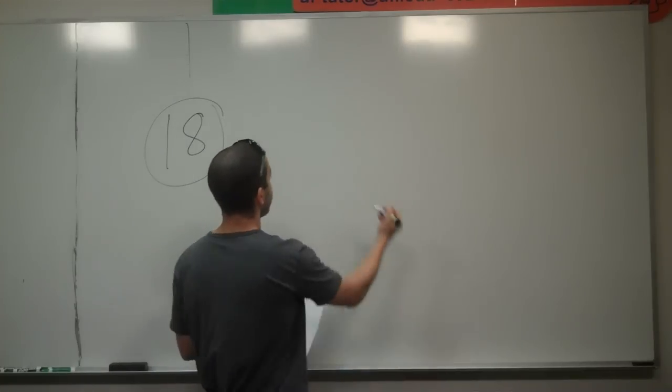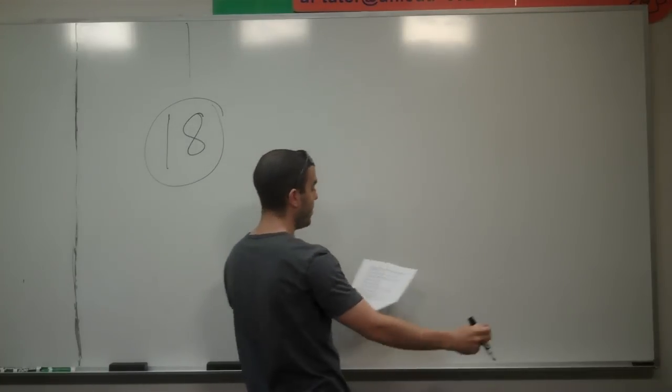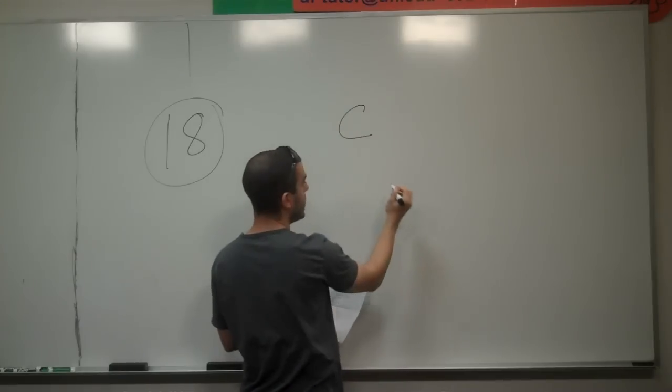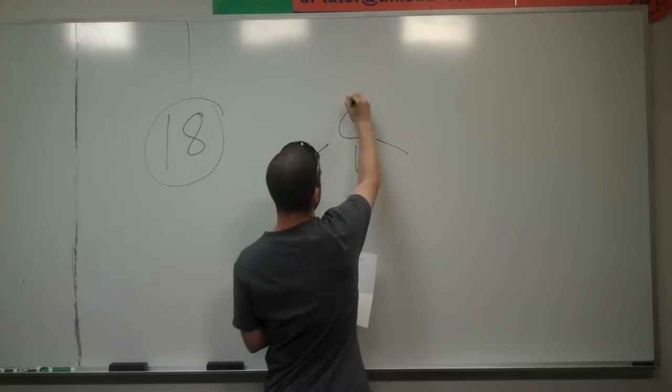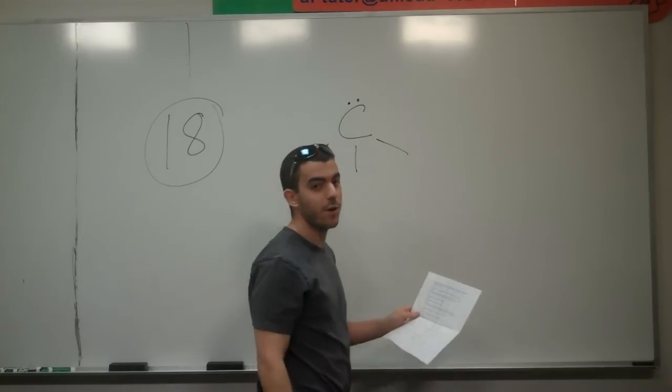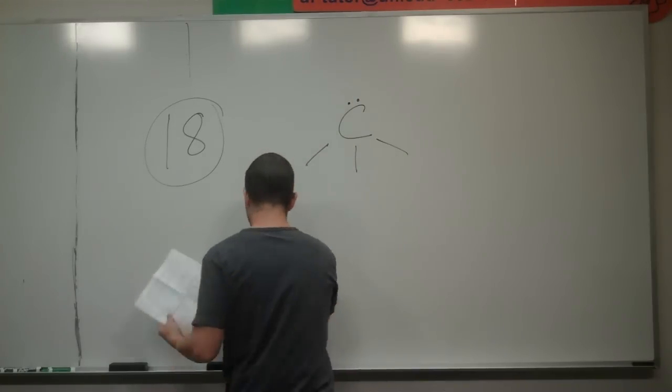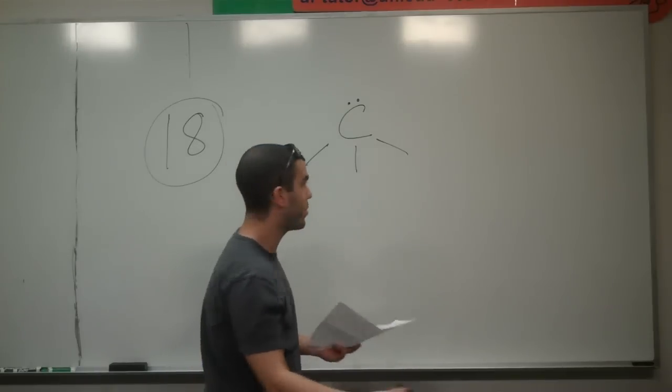So, for trigonal pyramidal, you guys remember that our central atom, whatever it is, needs to have three bonds and one lone pair. So basically, in all of our systems, we need to produce that.